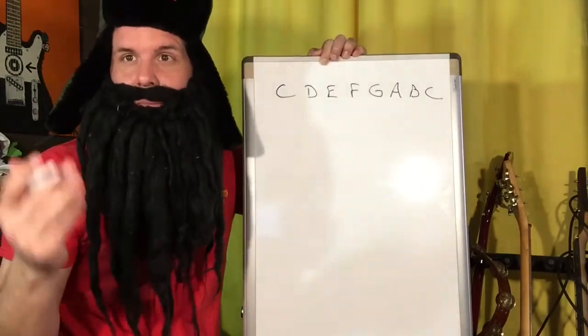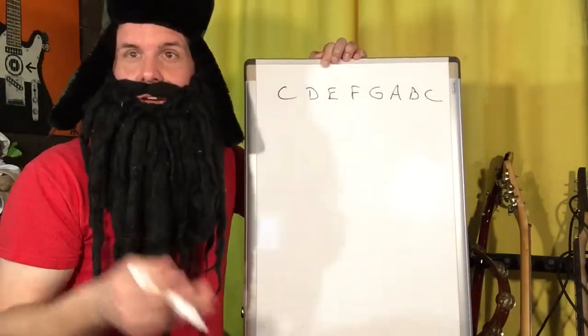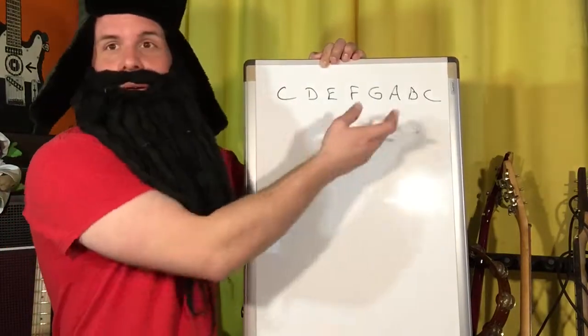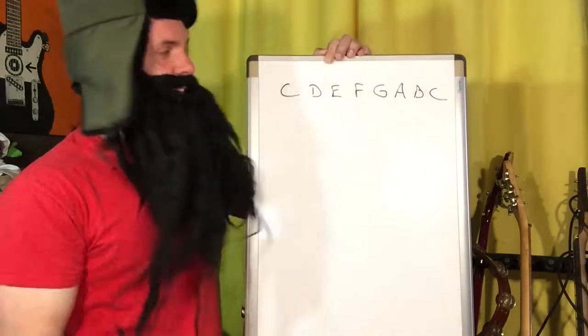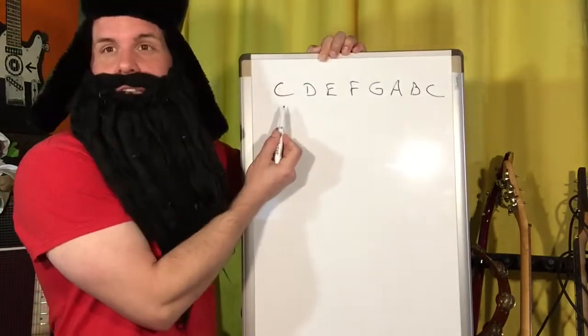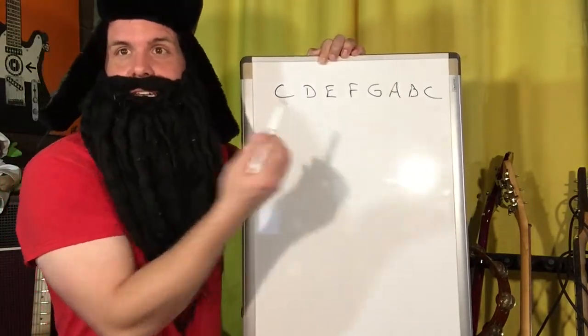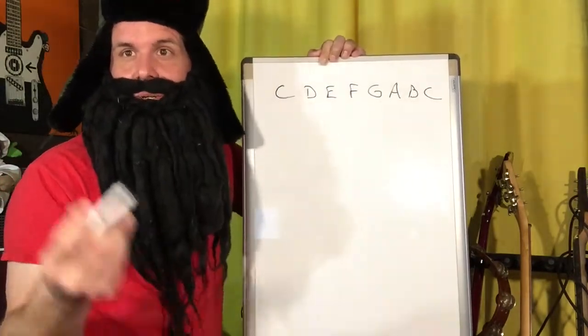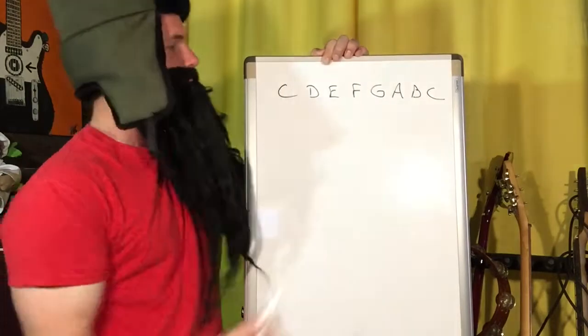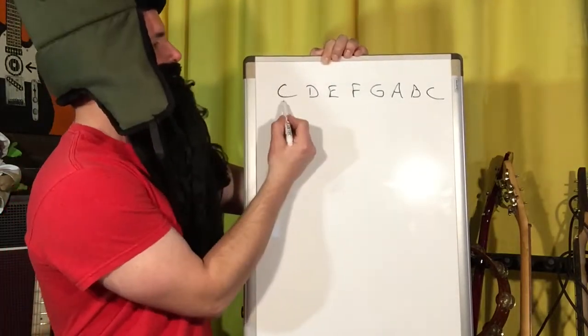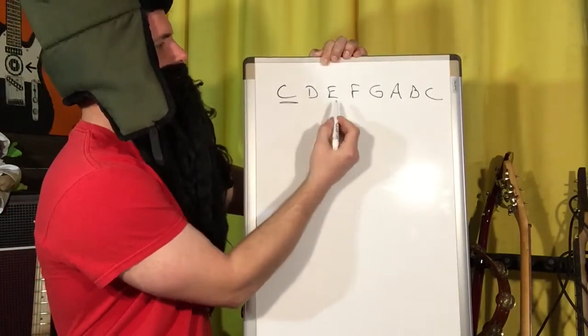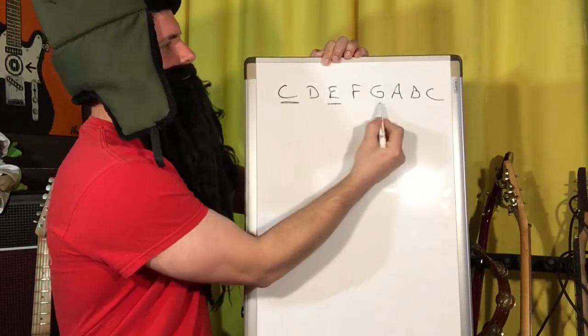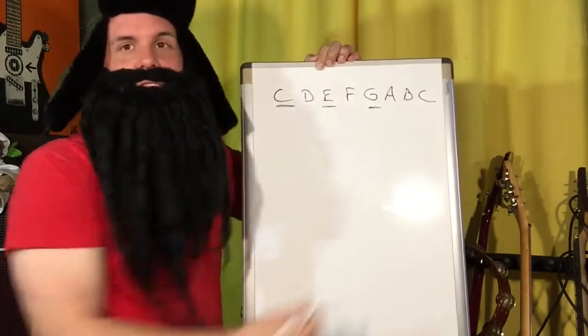Chords are made up of stuff from their respective scales. So now we are talking about the C major chord that you all know and love. The C major chord is made up of C, E, and G.